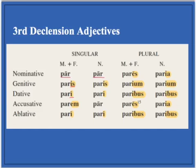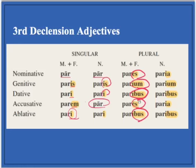Paris, pari, parem, pari — because of that I in the ablative singular. Then pares, parium, paribus, pares, paribus. For the neuter it's par, paris, pari, and then neuter law — nominatives and accusatives are the same. Then I in the ablative singular. Then it's paria, parium, paribus, paria, paribus.